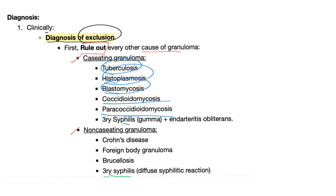Tertiary syphilis could be either type. If it's the gumma, it's a caseating granuloma with endarteritis obliterans. But if it's a diffuse syphilitic reaction, it's a non-caseating granuloma. I asked this question on my Facebook page — do you know how many students answered correctly? Zero. All of them said non-caseating. It depends.